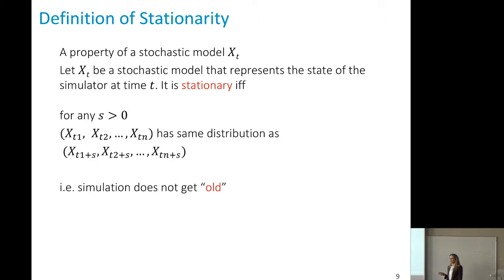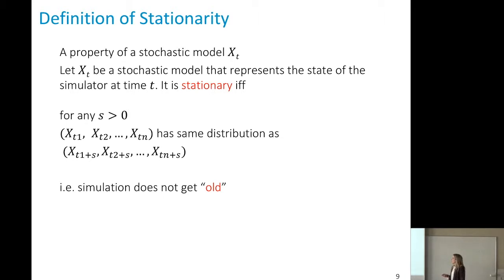Stationarity is a property of a stochastic model X(t). If X(t) represents the state of our simulation at time t, it is stationary if the joint distribution of the state at N consecutive times — X(t1), X(t2), ..., X(tN) — is the same as the joint distribution when we shift those times by s. This means the simulation does not 'get old' — the distribution remains the same regardless of time shift.